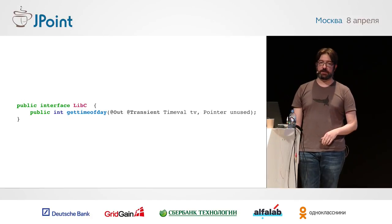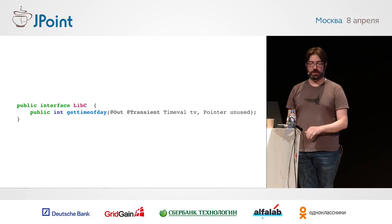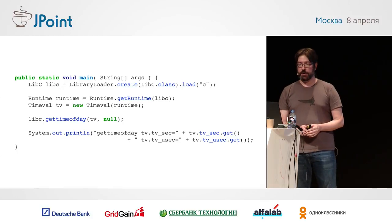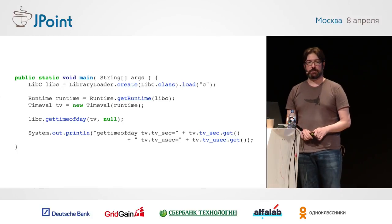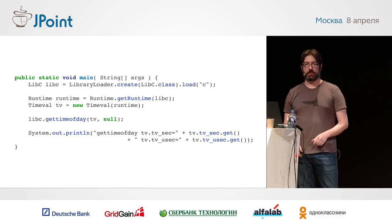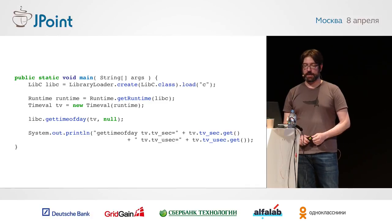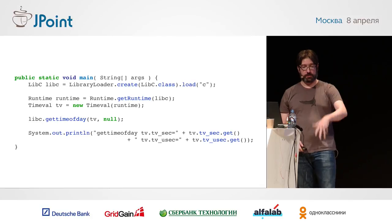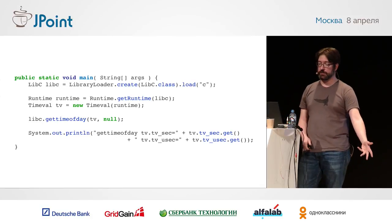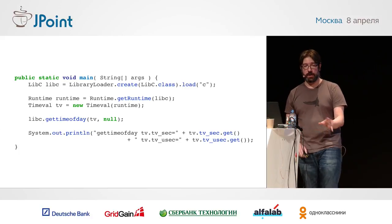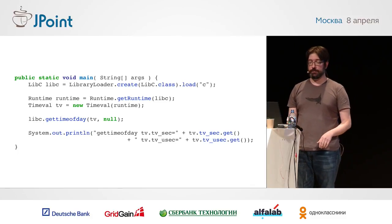We're not using the timezone parameter, so it's just an unused pointer here. Similar to the getPID code, we create a new instance of our libc class wrapping it around libc at the native level, create a new timeval struct just like any other Java object, make our call, it goes out to C, populates the timeval structure, and now we have the fields available to use directly. This is the only code you need to write — no C code behind the scenes.